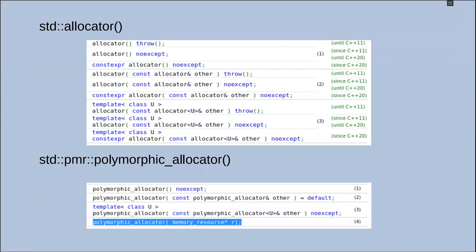As you can see, both have default constructor and copy constructor, but polymorphic allocator takes memory resource and allocates using this resource.